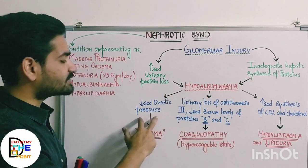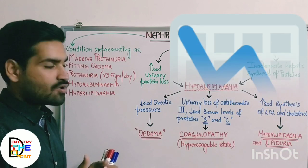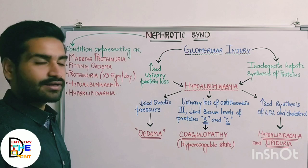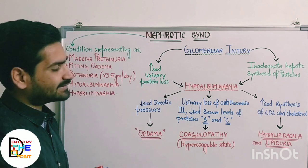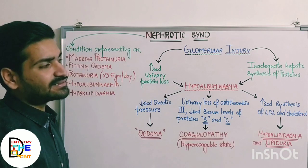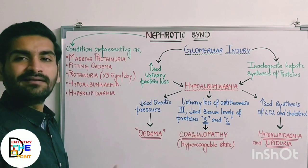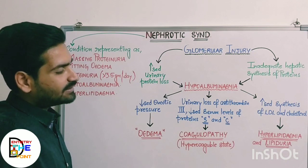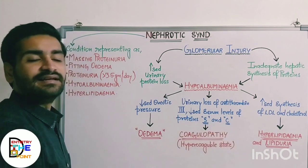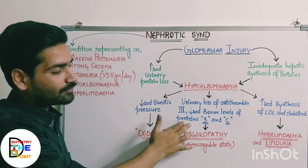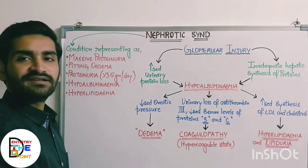Due to hypoalbuminemia, three things happen. First, decreased oncotic pressure — the pressure inside the vessels decreases because proteins are being excreted. Second, all the intravascular fluid moves into the extravascular spaces, leading to increased synthesis of LDL and cholesterol. Third, there is urinary loss of antithrombin-3, along with decreased serum levels of protein S and C.